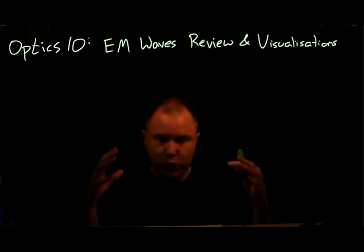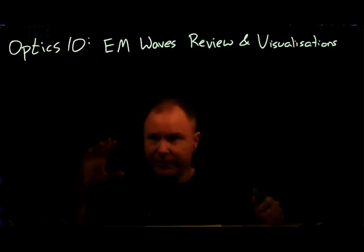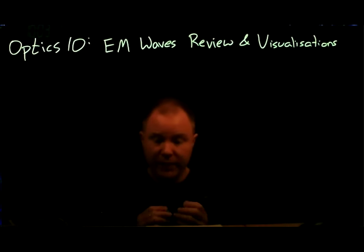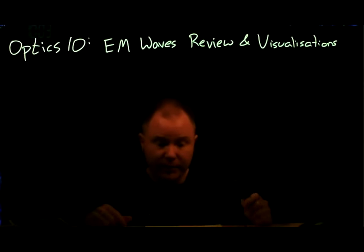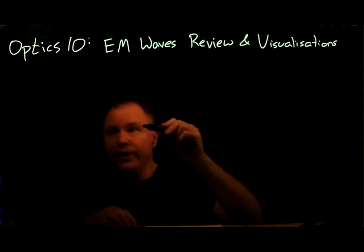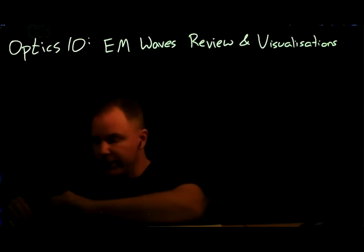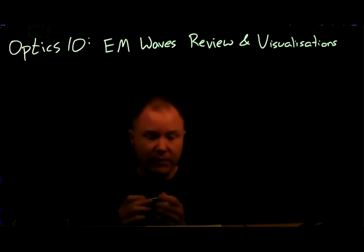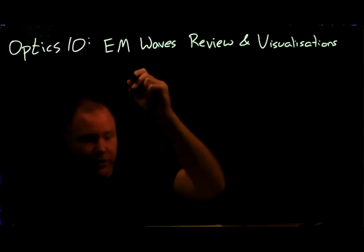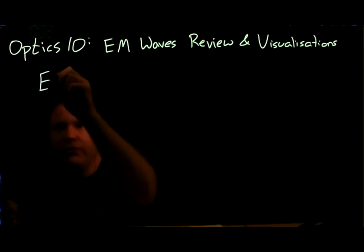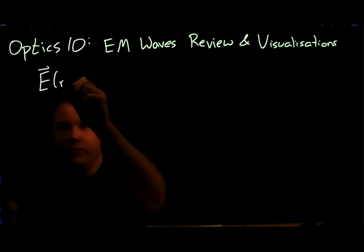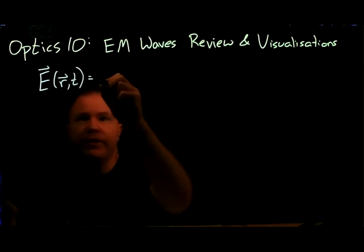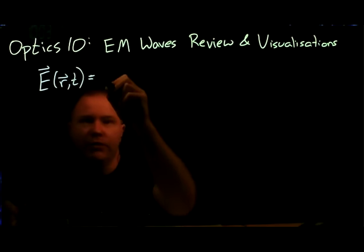The source-free Maxwell's equations have solutions that are pretty simple. The simplest solutions we're going to start with are monochromatic plane wave solutions. To analyze that, we take our electric field, which is a real vector field — a real function of r and t — and we break it up into the sum of two complex fields for mathematical convenience.